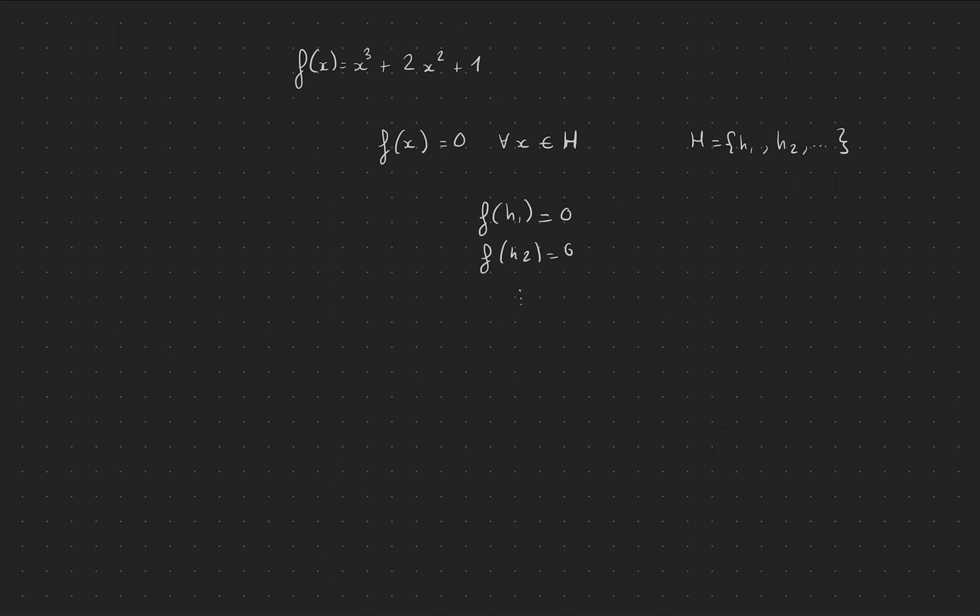But instead we have a very succinct way of showing that, and that's one magical part of the zkSNARKs and of PLONK - this technique to compress a proof that f(x) is equal to zero for all of these x's in H and compress that into something much smaller.